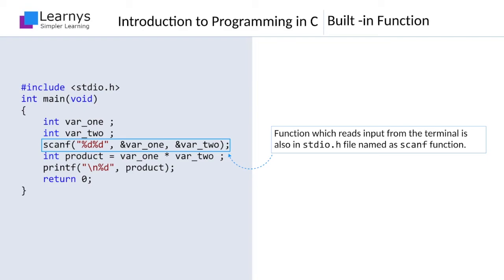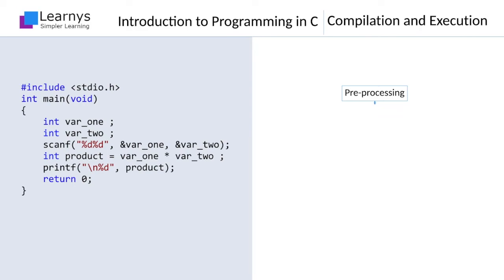Let us briefly understand the compilation process. The compilation process usually involves three stages: preprocessing, followed by compilation, and finally assembling and linking. Once the program has been compiled, it can be executed.